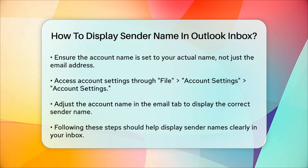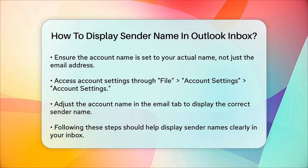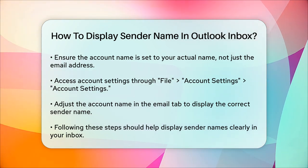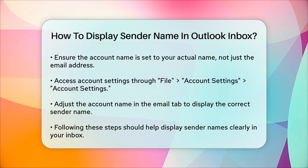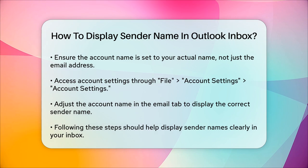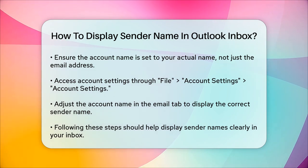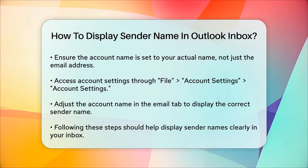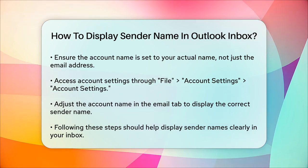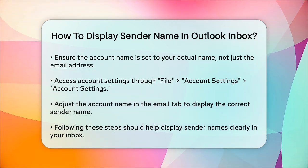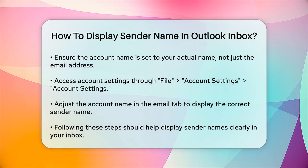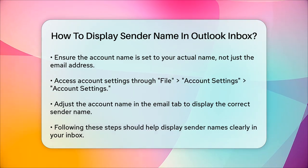If you're still having trouble, check your account settings to make sure the account name is set to your name rather than your email address. Go to File, Account Settings, Account Settings, and then select the Email tab. Here, you can adjust the account name to display your actual name. By following these steps, you should be able to see the sender's name clearly in your Outlook Inbox, making it easier to identify who your emails are from at a glance.